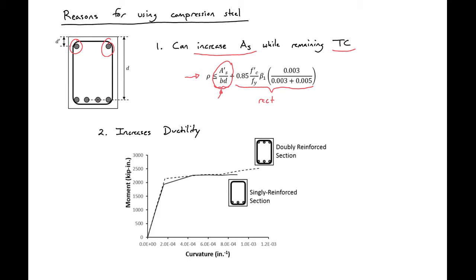This can allow us to get the needed capacity in shallower sections, or sections where we may have some kind of depth limitation from our architect or building layout requirements. The next reason that we want to use compression steel is it allows us to increase our ductility in the section.